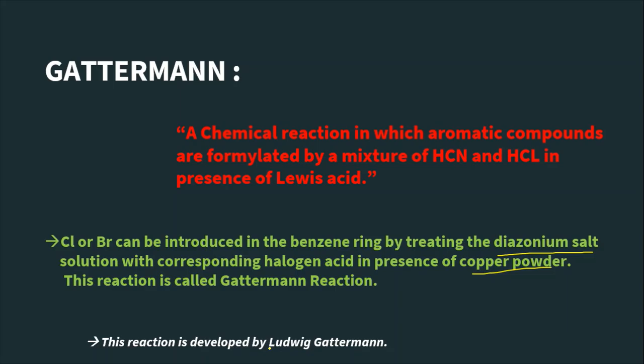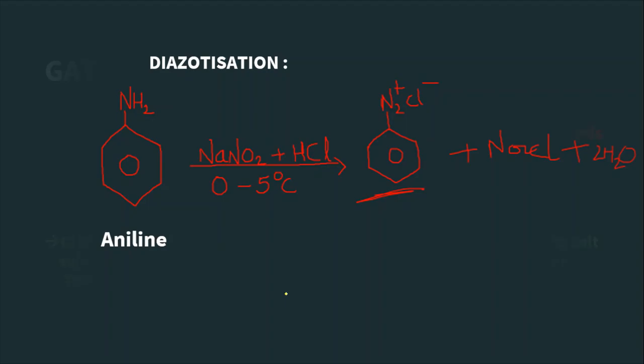This reaction is called Gatterman reaction. This reaction is developed by Ludwig Gatterman, so hence it is named as Gatterman reaction. This is a diazotization reaction, and benzene diazonium chloride, which is obtained as a product, is used as a reactant in both Sandmeyer and Gatterman reactions.